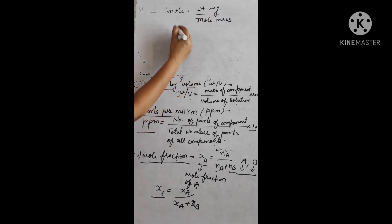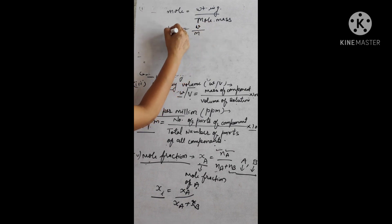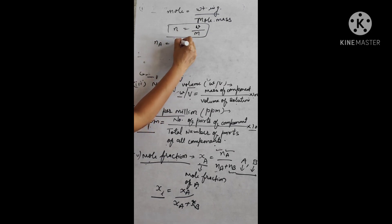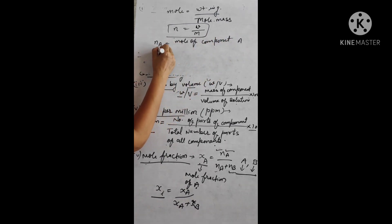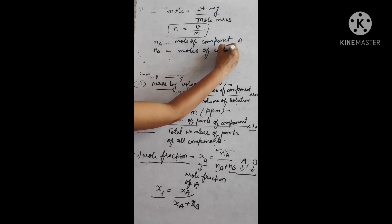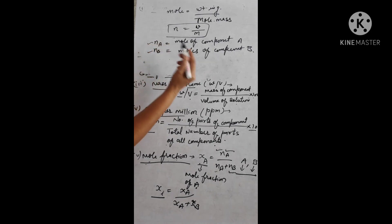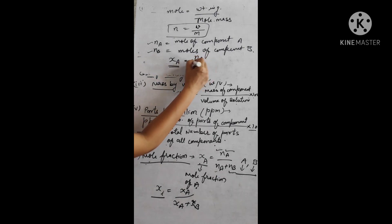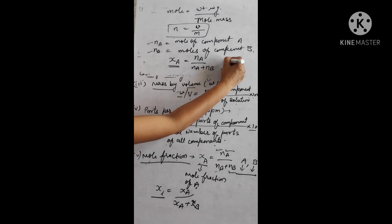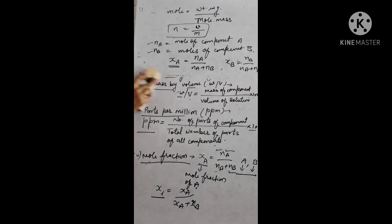So nA is the mole of component A and nB is the mole of component B. Total moles = nA + nB. The mole fraction of A is: xA = nA / (nA + nB). The mole fraction of B is: xB = nB / (nA + nB). These are the mole fractions xA and xB.